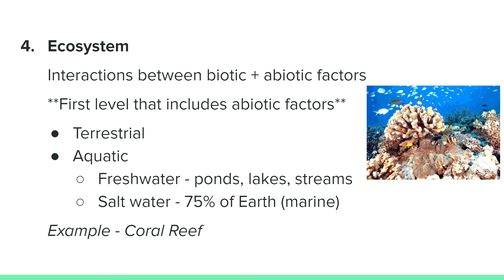Ecosystems can be found on land, called terrestrial, or in water, called aquatic. There are two main aquatic ecosystems: fresh water, like ponds, lakes, and streams, and salt water, called marine, like oceans and seas.